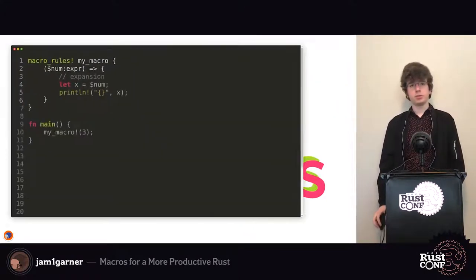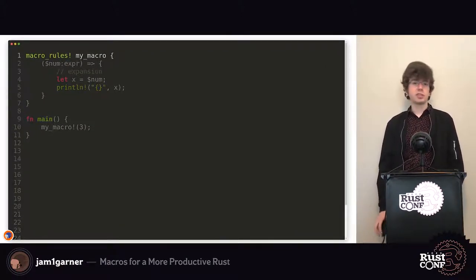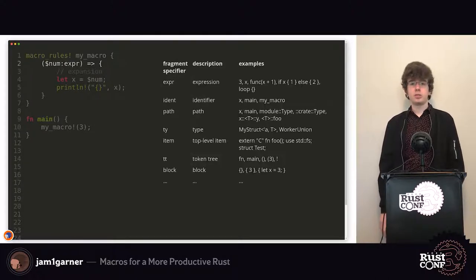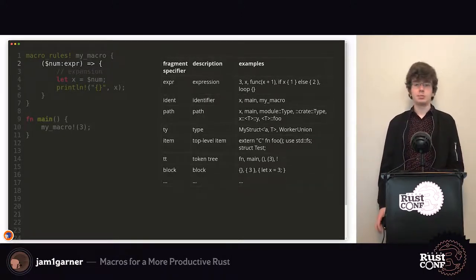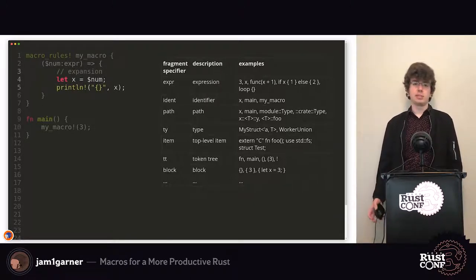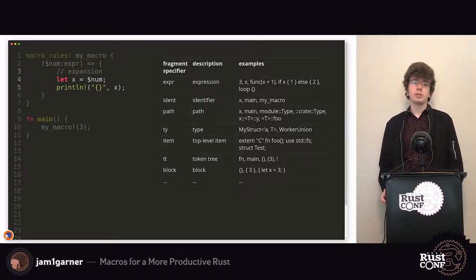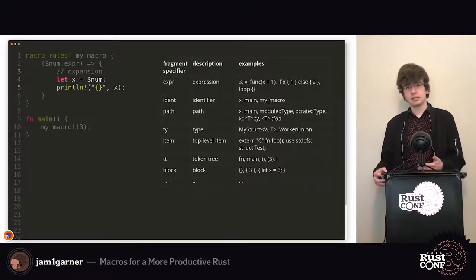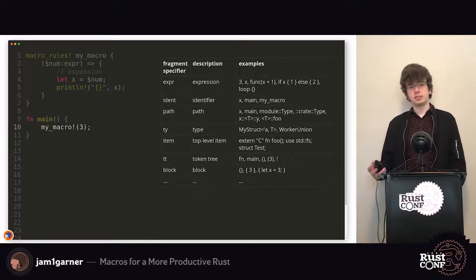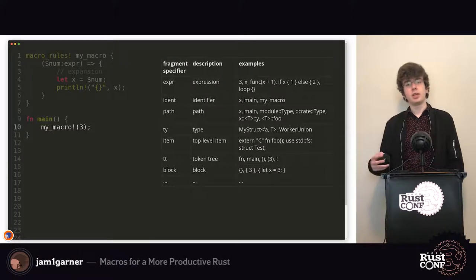A macro is composed of only a few parts. You have the declaration, which sets the name of the macro. You have the pattern, which handles parsing the input — you might have different types of syntax fragments: expressions, names of types, identifiers. You can pass arbitrary Rust into it and set what things you want to match against. Then you have the expansion, which is what the macro becomes after you call it.